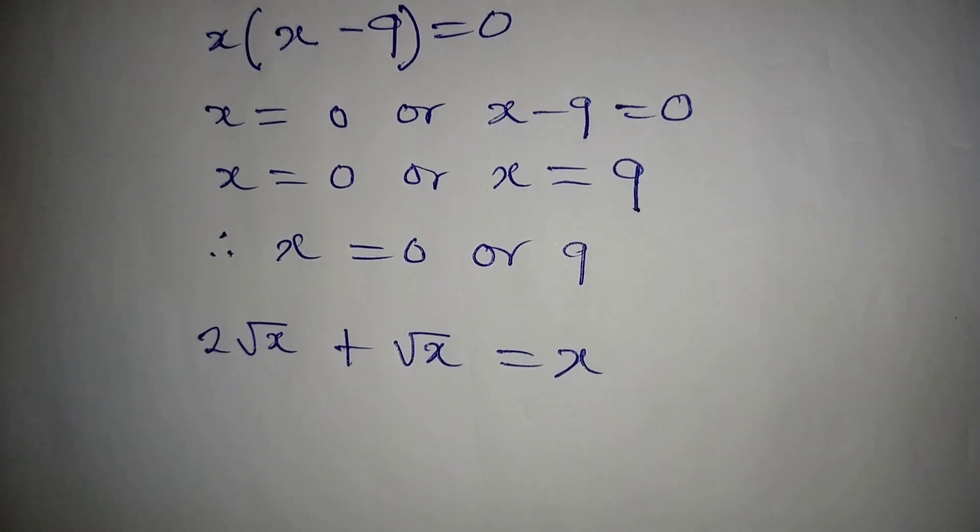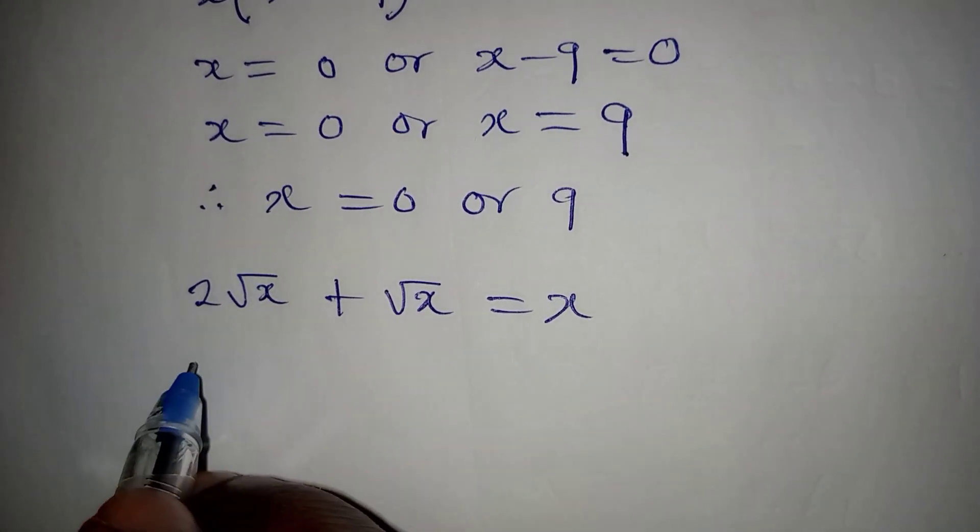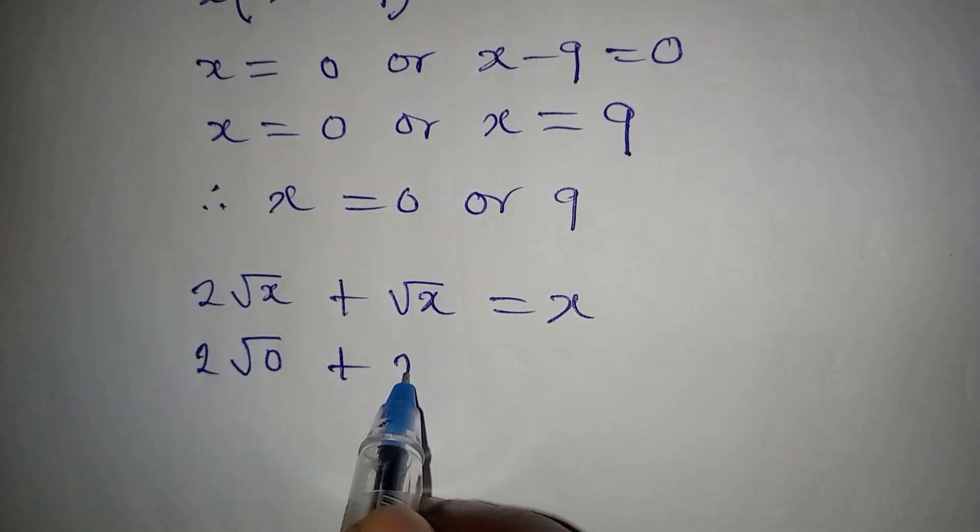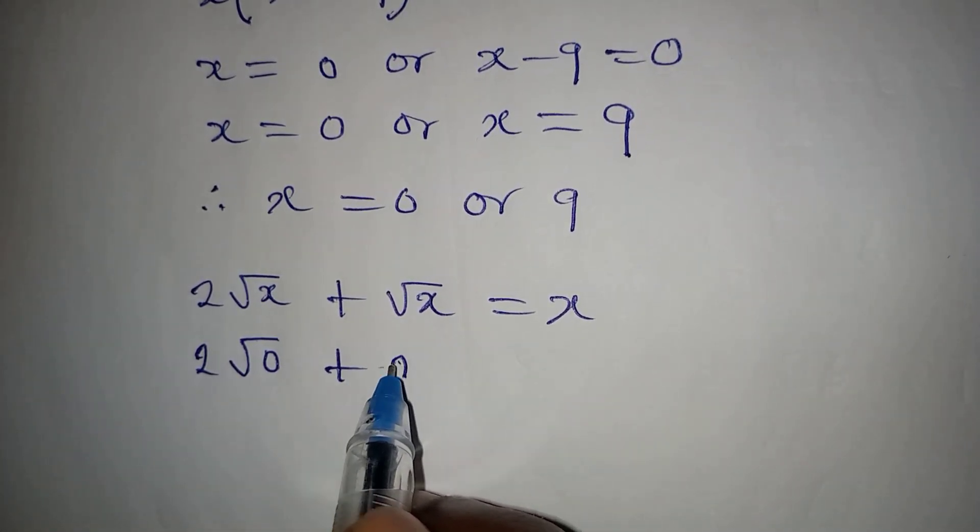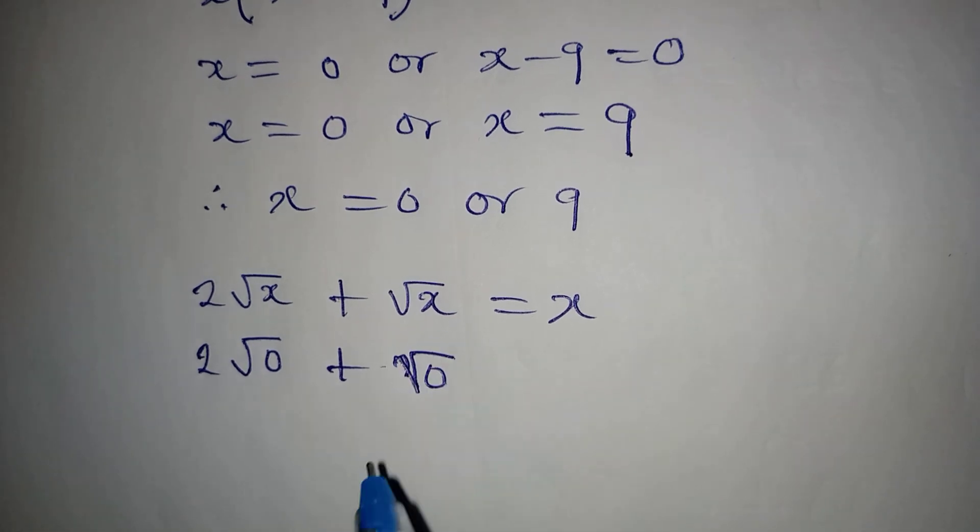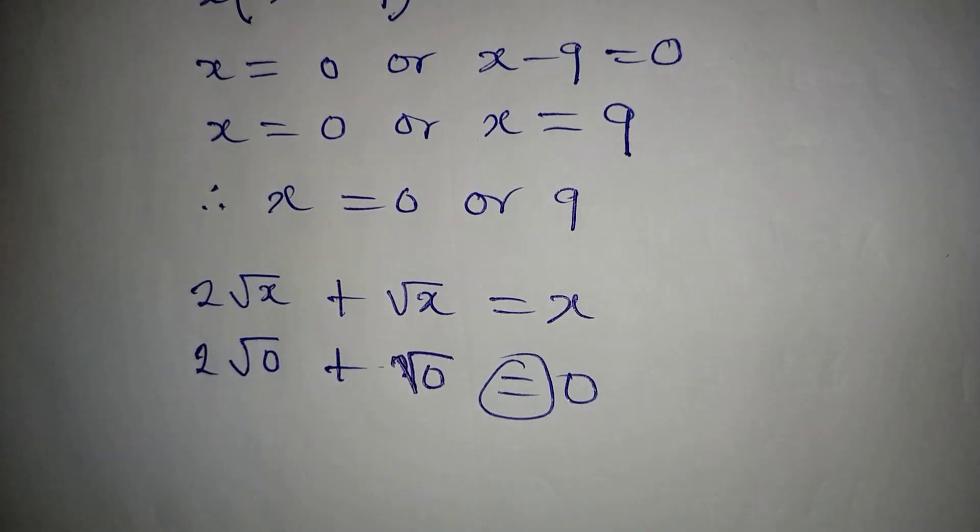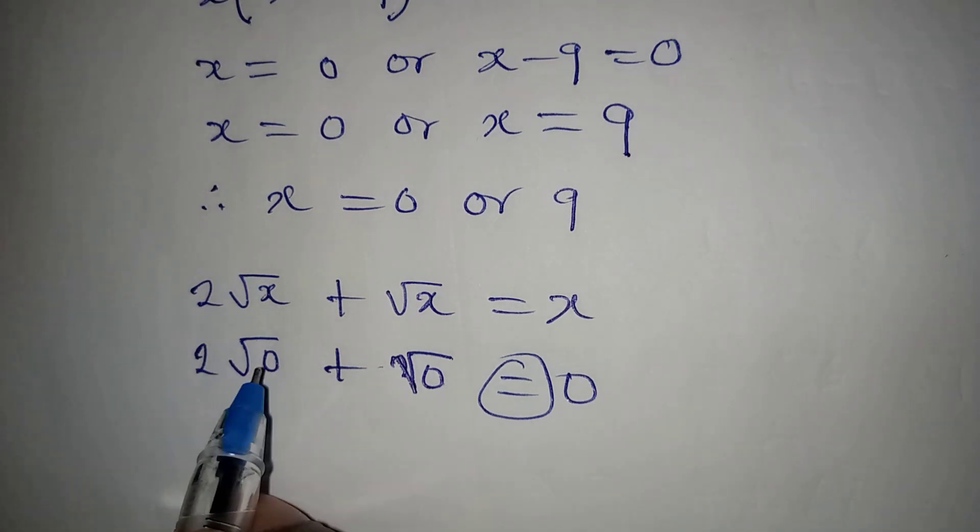It's going to be 2√0 plus √0, right? And will this give us 0? I think yes, because 2 times √0 will give 0 plus √0 is 0.